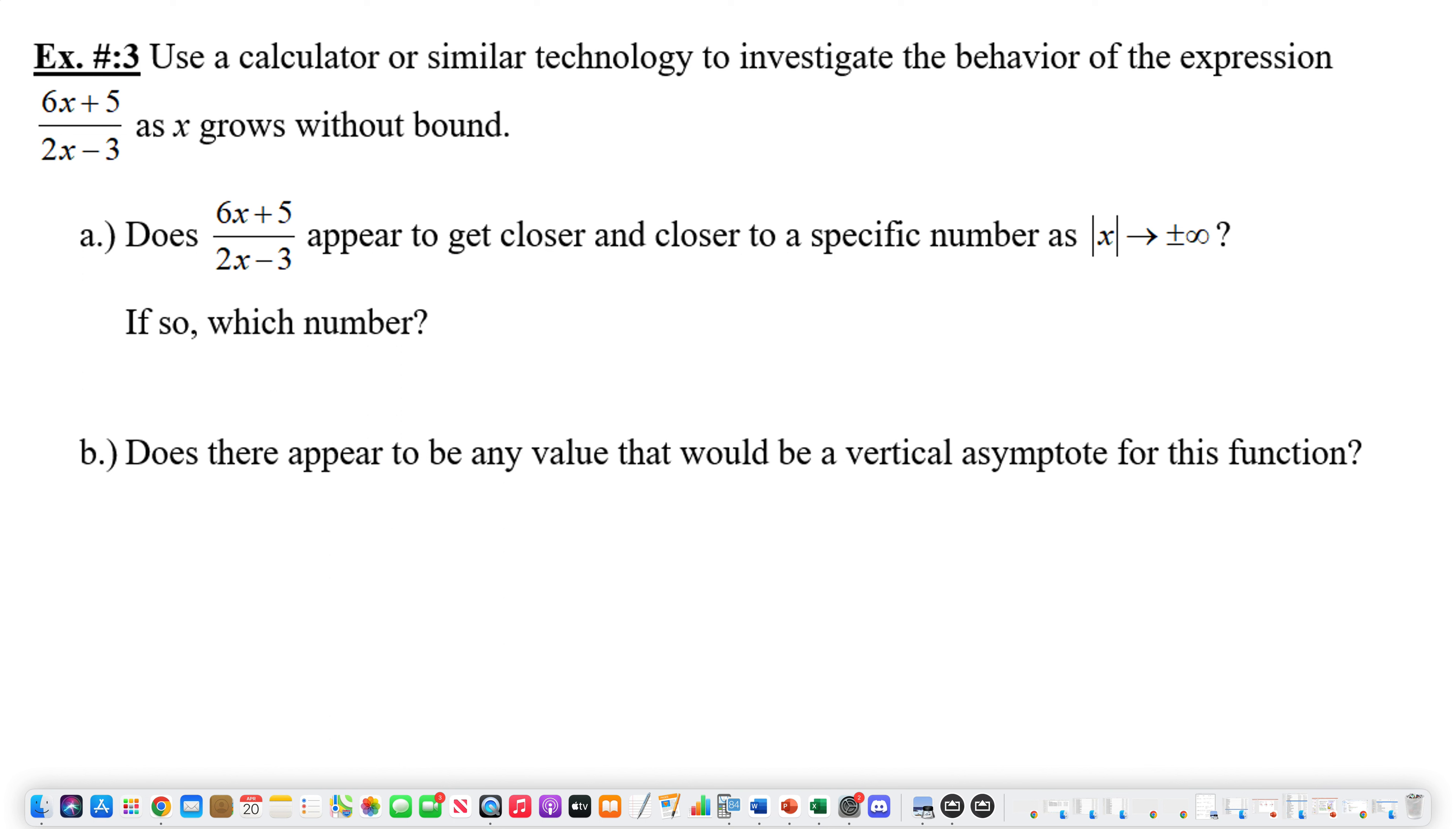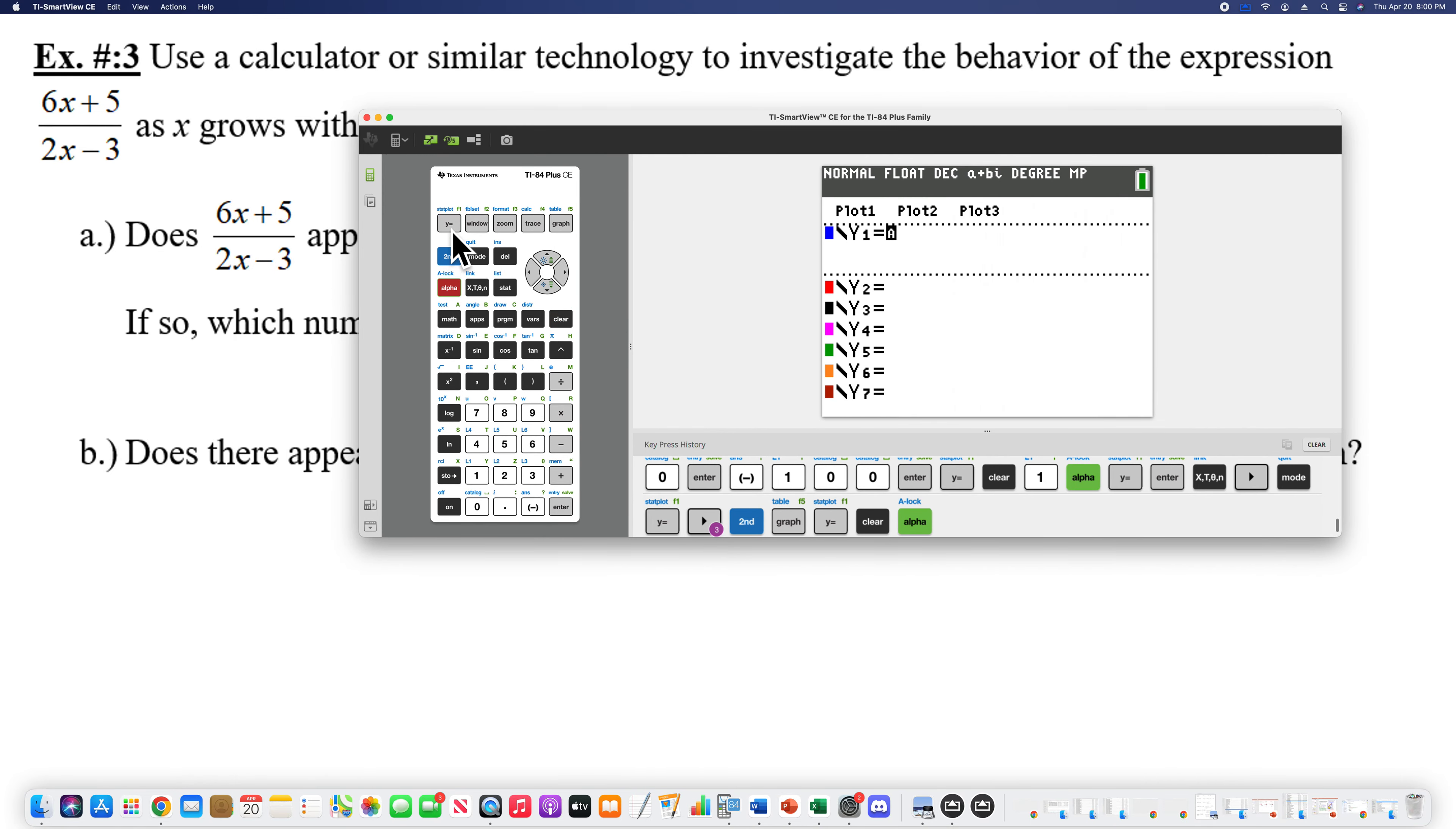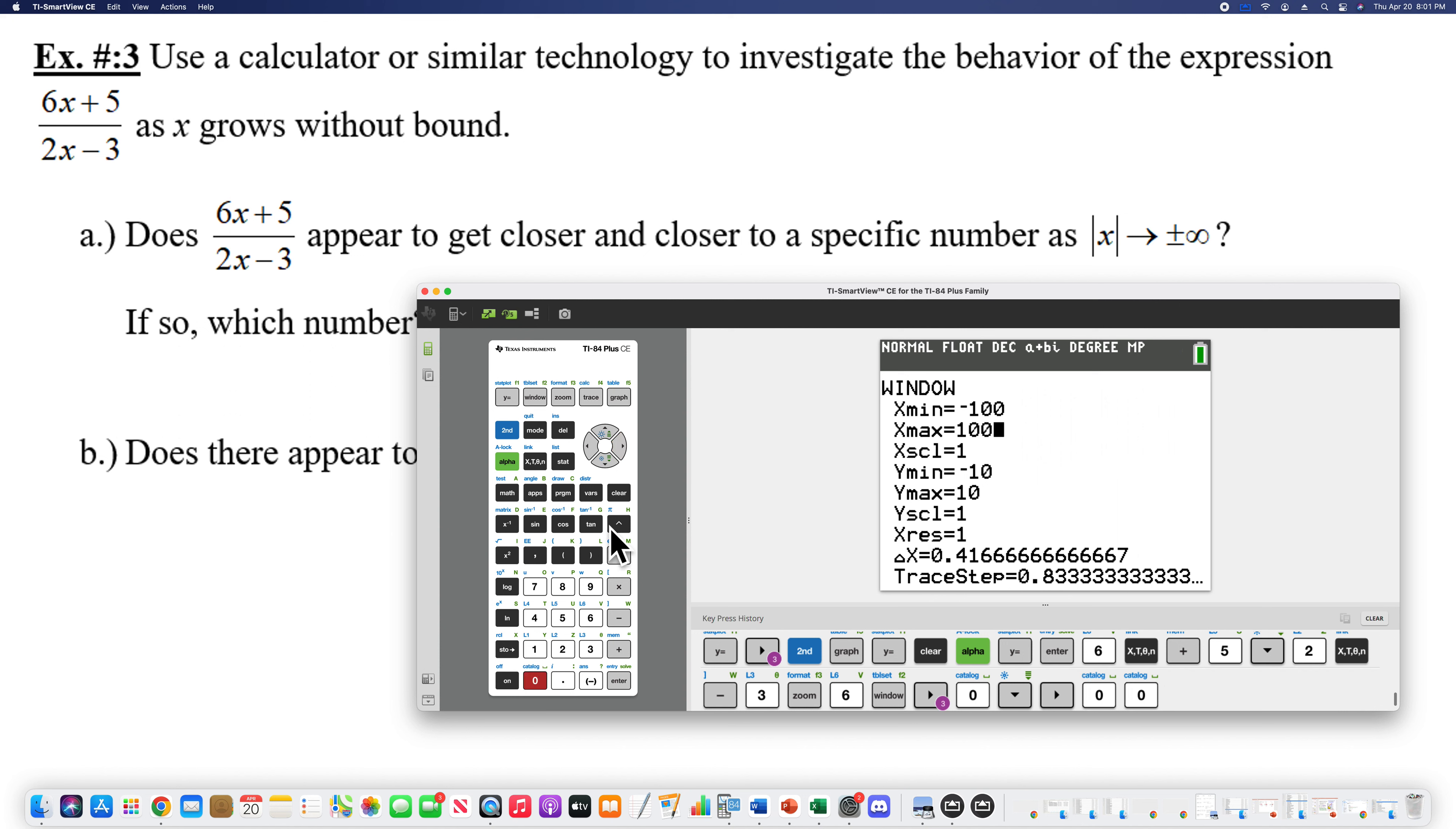Use a calculator or similar technology to investigate the behavior of the expression 6x plus 5 over 2x minus 3. So we're going to y equals. Clear that out. We need 6x plus 5 over 2x minus 3. So I'm going to graph this as a zoom 6 window. Now let's see. What are they asking me to do here? As x goes to positive infinity and negative infinity, where are we approaching? Well, I really don't see enough of what's happening here. I don't see anything. It looks like it's starting to flatten out. So what I'm going to do is hit my window. Change my min to a negative 100 and then to a positive 100. Regraph it.